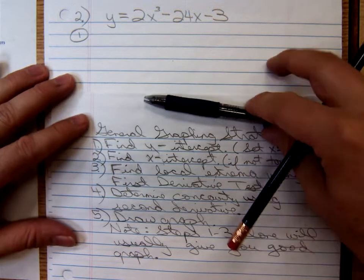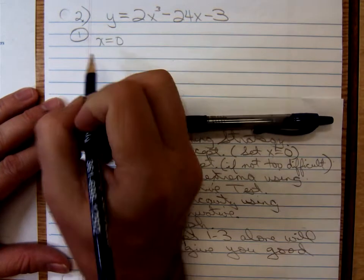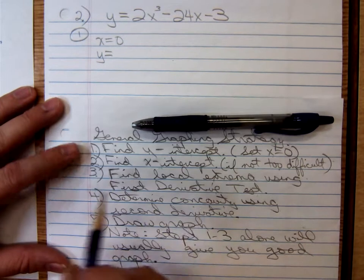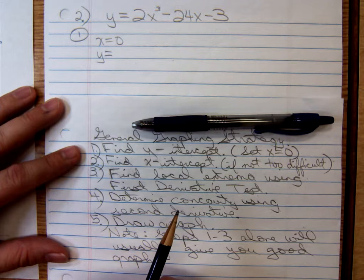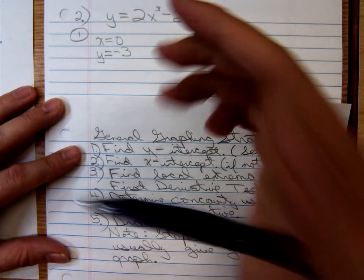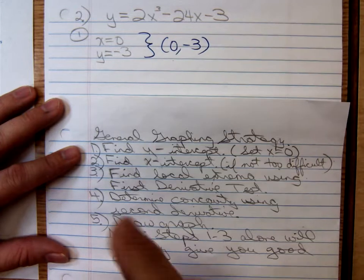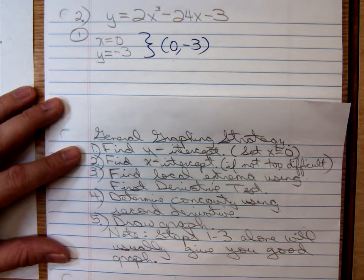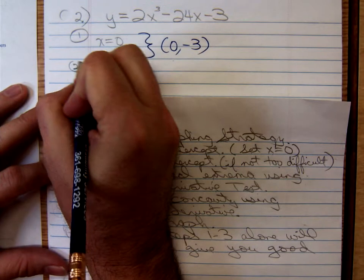So let me write down the problem. This is number two for the students in my Math 1325 class this semester, Fall 2014. First of all, we'll use our general graphing strategy. We'll set x equal to zero. What's that going to give me for y? Negative 3. So that means the graph is going to pass through the y-axis at negative 3.